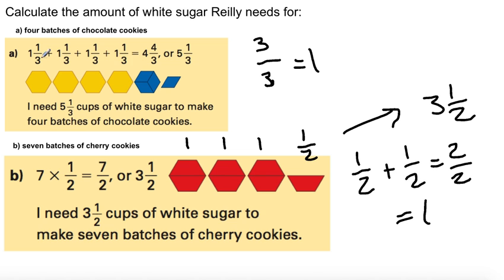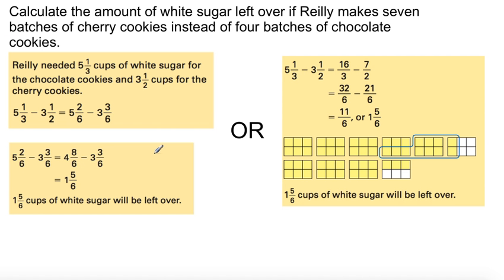Now, calculate the amount of white sugar left over if Riley makes 7 batches of cherry cookies instead of 4 batches of chocolate cookies. Riley needed 5 and a third cups for the chocolate cookies and 3 and a half cups for the cherry cookies. Notice we do not have a common denominator, so we're subtracting: 5 and 1 third minus 3 and 1 half. We've got to make these common denominators — 2 times 3 is 6. So 2 times 1 is 2 over 6, and 3 times 1 is 3 over 6.